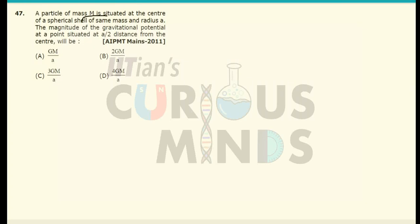A particle of mass M is situated at the center of a spherical shell of same mass and radius A. The magnitude of the gravitational potential at a point situated at A by 2 distance from the center of the sphere will be equal to.